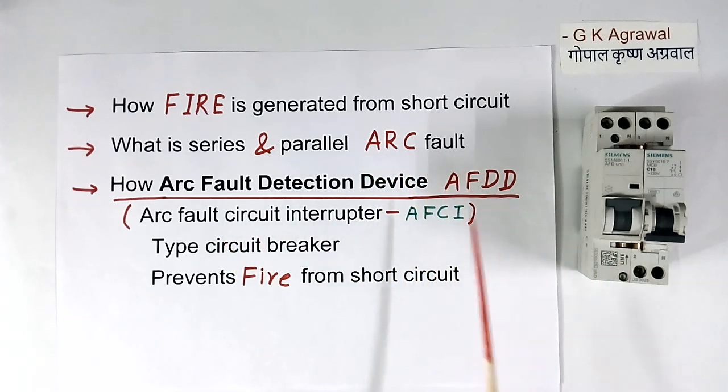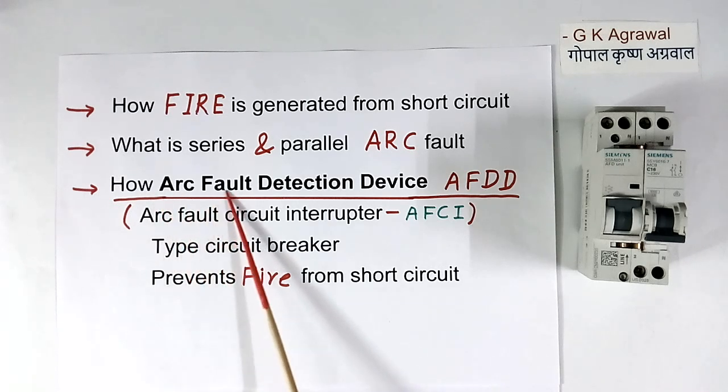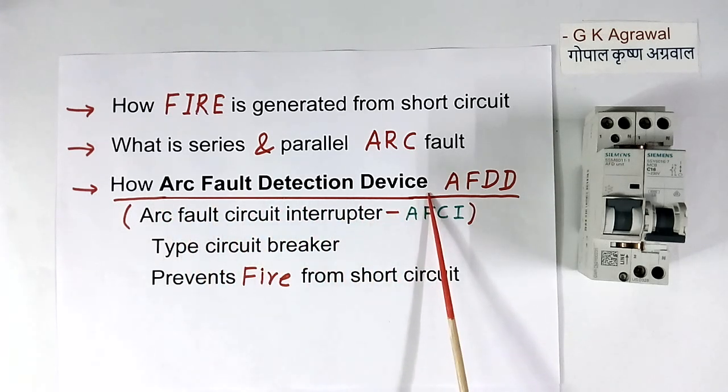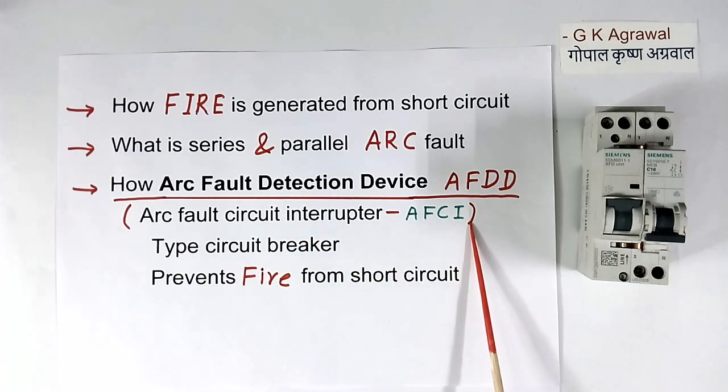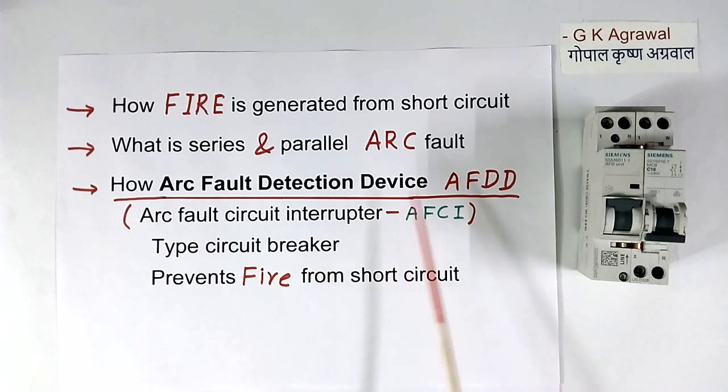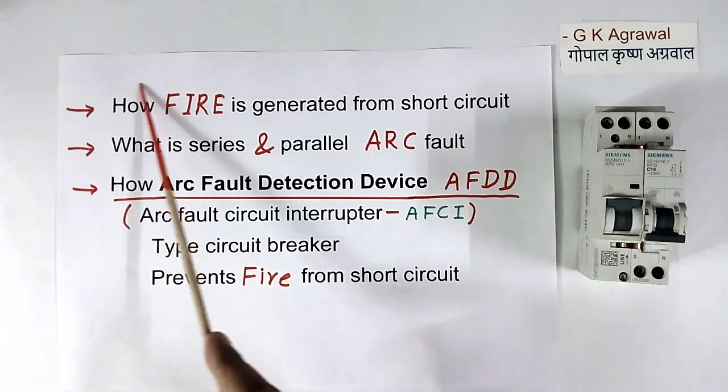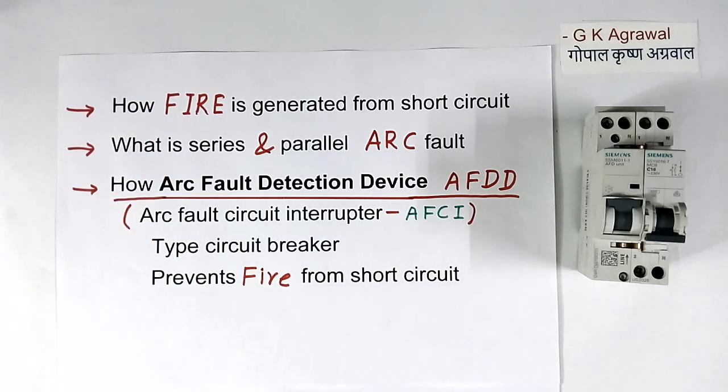I have a device AFDD, a special circuit breaker that is called arc fault detection device. It is also called arc fault circuit interrupter. Then how AFDD prevents fire from short circuit? First I will explain all these, then I will show you this breaker.